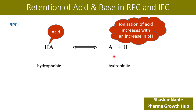So the acid can stay in a hydrophobic mode and can convert to hydrophilic due to a change in pH. The ionization of an acid increases with an increase in pH — meaning the acid stays as hydrophobic molecule HA at acidic pH, and as pH increases toward the alkaline side, the acid gradually becomes hydrophilic. This depends on the pH of your mobile phase in the chromatographic system.